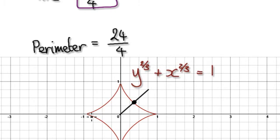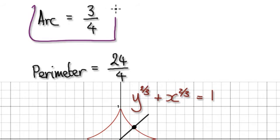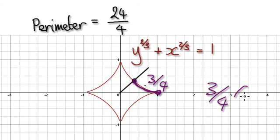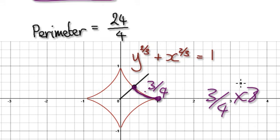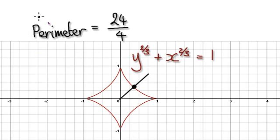So this arc here is 3 over 4. Now we need to times by 8. So 3 over 4 times 8 will then give you the perimeter. The overall perimeter is given by this. Thank you.